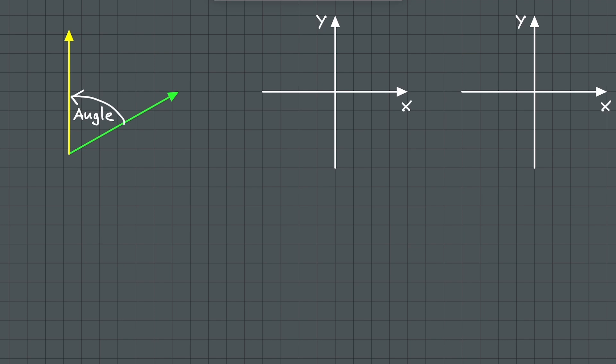We call the starting point of the ray the initial side of the angle and the position after the rotation the terminal side. The end point of the ray is the vertex of the angle.